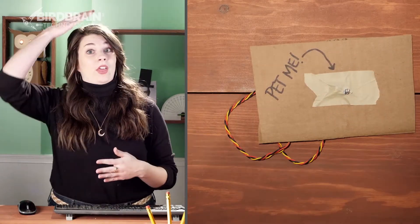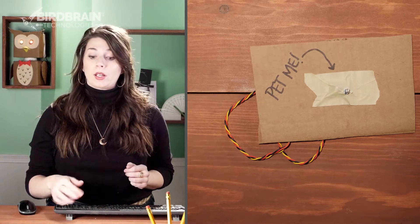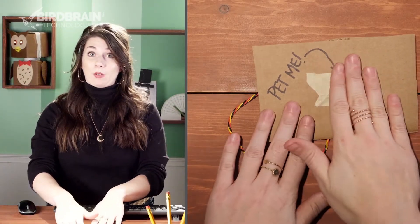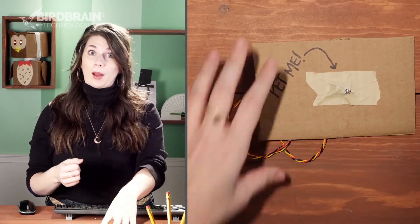And now that could go on the head of your animal, on the back of your animal, wherever you would want it to be pet. When you have it plugged into a hummingbird and programmed, it will initiate your robot to do something.